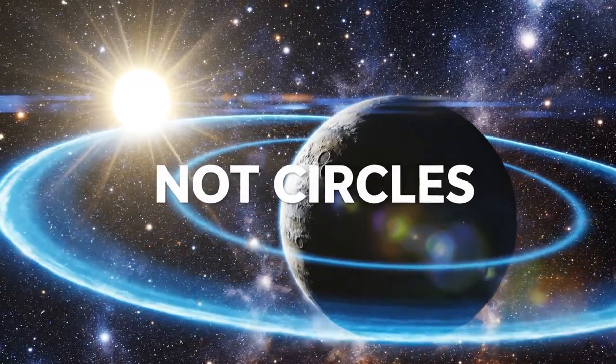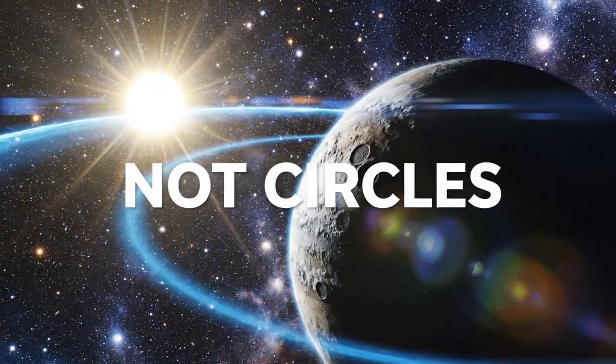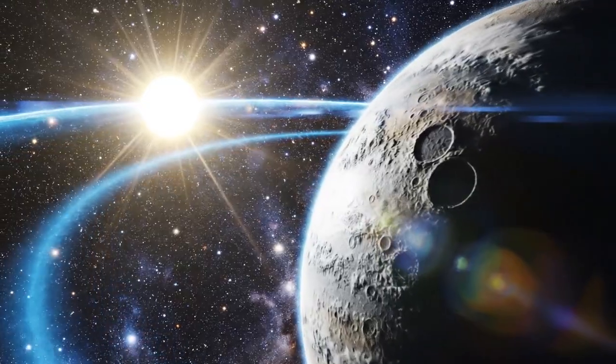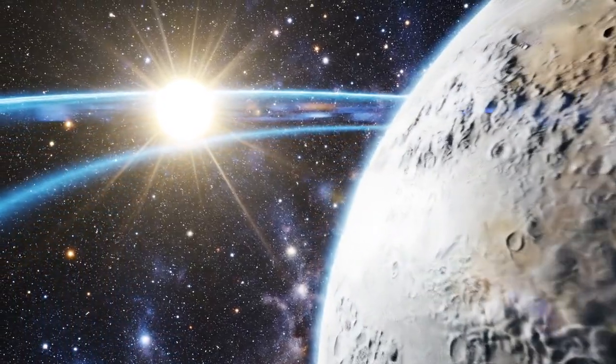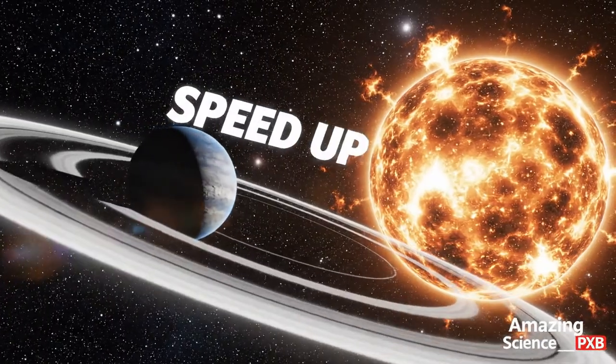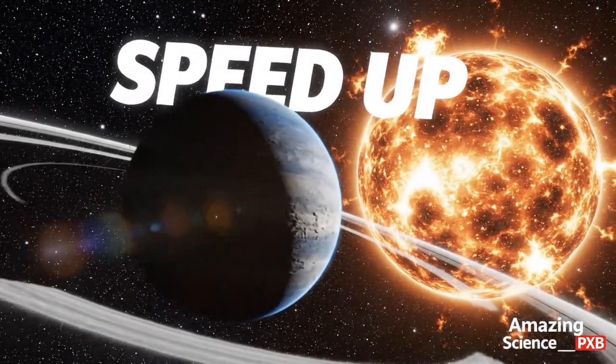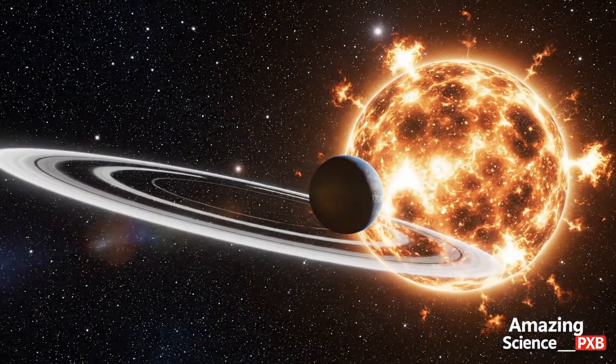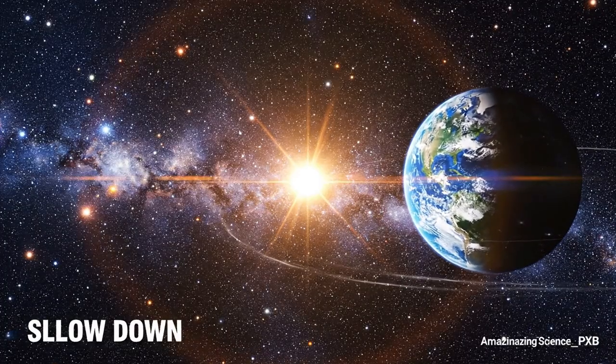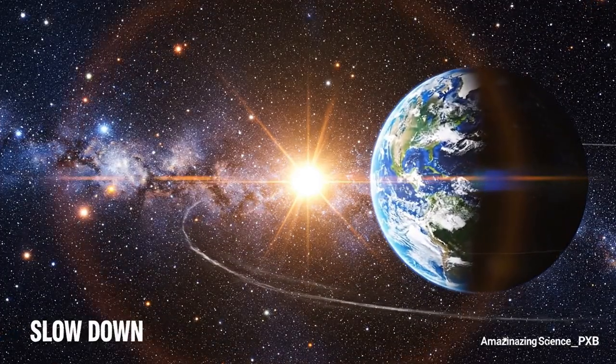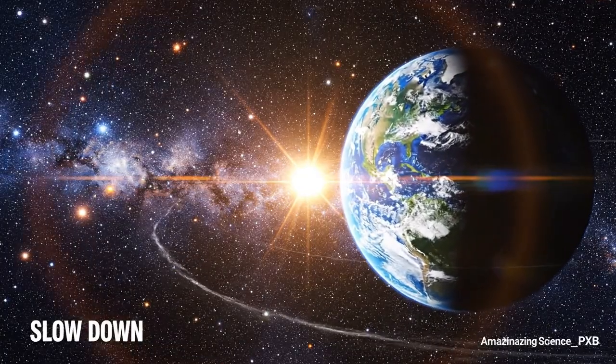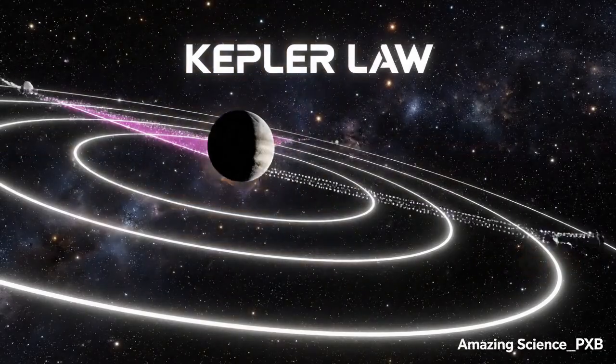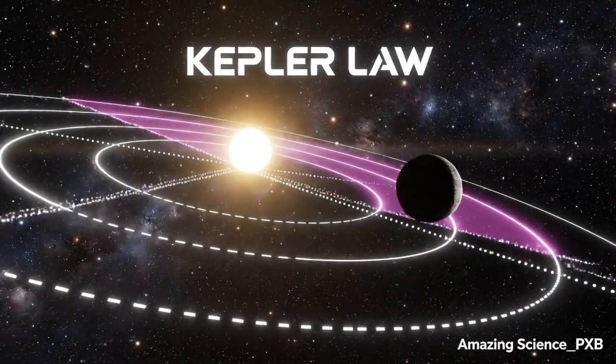Most planetary orbits are elliptical. Planets move faster when closer to the Sun and slower when farther away. Equal areas are swept in equal time.